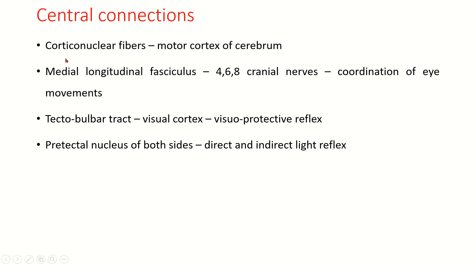Central connections: corticonuclear fibers come from the motor cortex of the cerebrum. The medial longitudinal fasciculus connects the third cranial nerve with the 4th, 6th, and 8th cranial nerves, helping in coordination of eye movements. The tectobulbar tract, connected to the visual cortex, mediates the visuo-protective reflex. The pretectal nucleus of both sides is concerned with the direct and indirect light reflex.